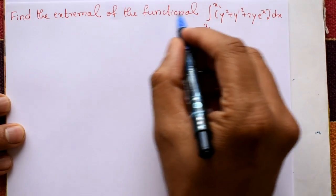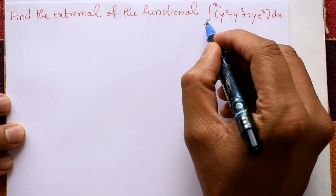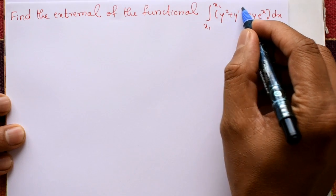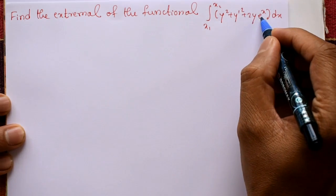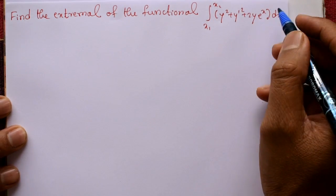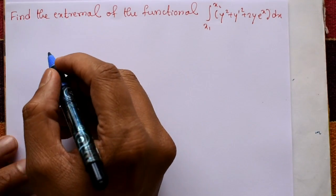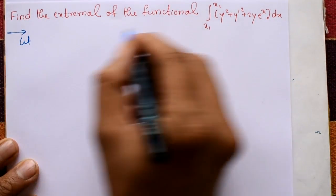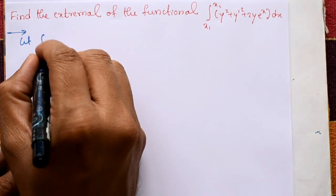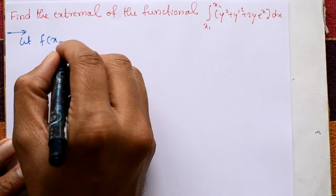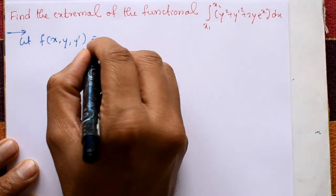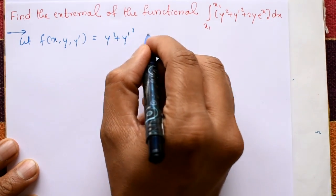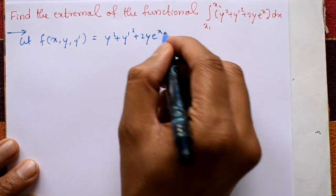Find the extremal of the functional: integral from x1 to x2 of y² + y' squared + 2y·eˣ with respect to x. Consider f(x, y, y') equal to y² + y'² + 2y·eˣ.